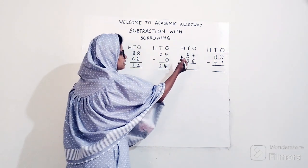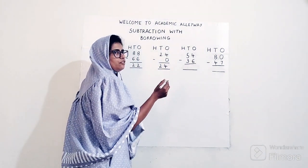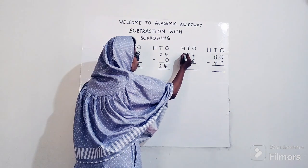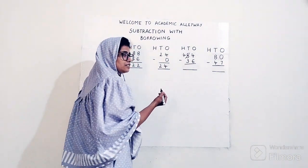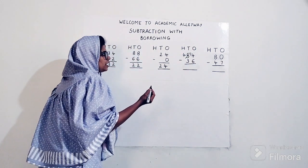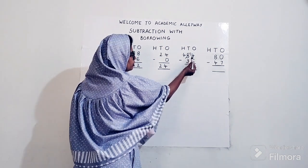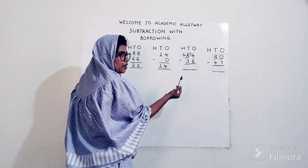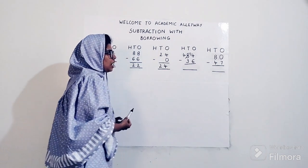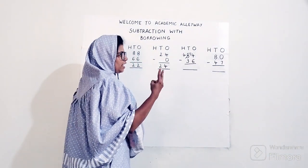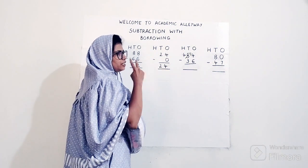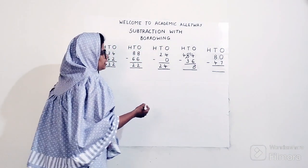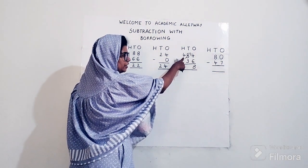I subtract 1 from 5 — count after 1 till 5: 1, 2, 3, 4, 5 — so 4 remains. That one borrowed goes over to the ones place. Now pay attention: you are not supposed to add 1 and 4 — this 1 and 4 becomes 14. Now 6 can be easily subtracted from 14. Count after 6 till 14: 7, 8, 9, 10, 11, 12, 13, 14 — so the answer is 8.